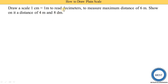One unit is the meter and the other is the decimeter. For constructing the scale, we require four parameters. First, we require the units: one is the meter, and the second is the decimeter. Second, we require the representative fraction. In some numericals, the representative fraction is directly given, but here it is not given — the scale is given, so we find the RF from that.